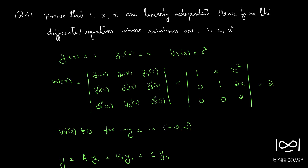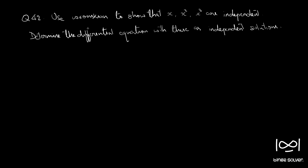We will do one more question. Use the Wronskian to show that x, x², x³ are linearly independent, and determine the differential equation with them as solutions. This is a similar question. Here y1(x) = x, y2(x) = x², y3(x) = x³.